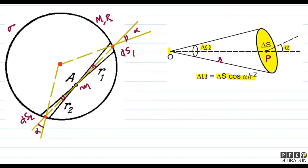Here, the small mass m is at point A. I take a small solid angle dω — which is very small — and we see that this cone cuts the spherical shell at two places: one area DS1 and another area DS2.